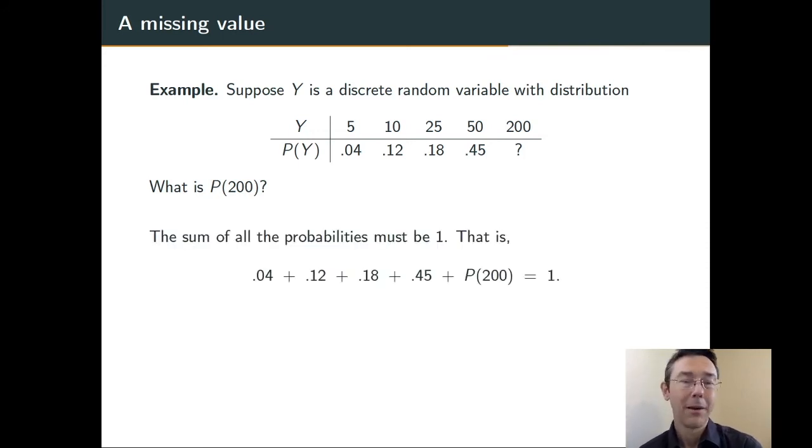Using the fact that all of the probabilities have to add up to 1. In other words, 0.04 plus 0.12 plus 0.18 plus 0.45 plus this unknown value have to add up to 1, equal 1.